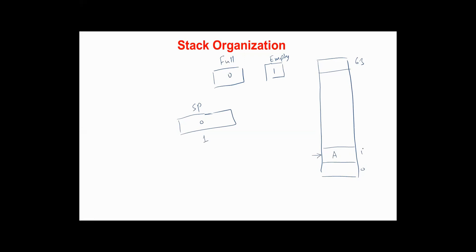Note that in this organization the first item is pushed into location one, not zero. On the next push, again we increment the stack pointer by one and write the item from the data register into the location addressed by the stack pointer. Right after the first push, the EMPTY flag should be cleared to zero, allowing pops to be performed on the stack.